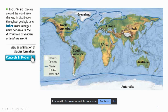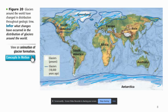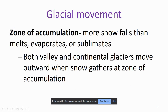Here's a picture that shows how the distribution of glaciers has changed over time. These blue outlines show where glaciers were present 18,000 years ago, and throughout geologic time this distribution has obviously changed. Glaciers move because there is a zone of accumulation where more snow falls than melts, evaporates, or sublimates. Both valley and continental glaciers move outward when snow gathers at the zone of accumulation.